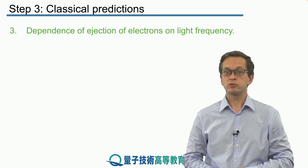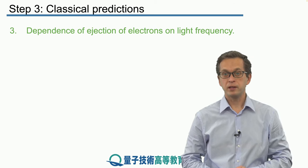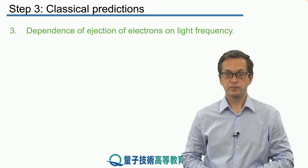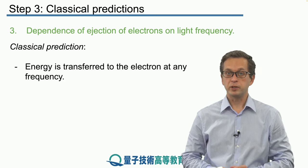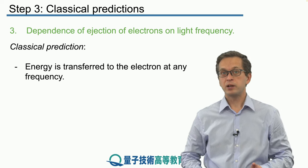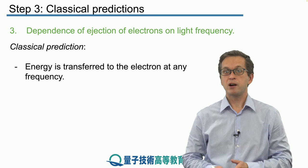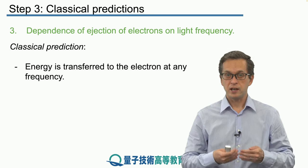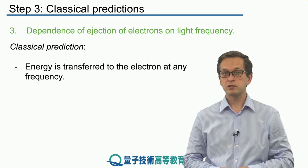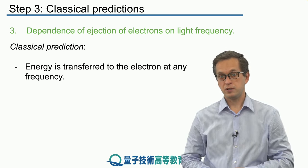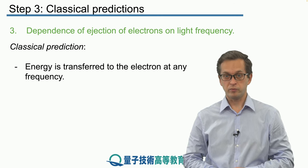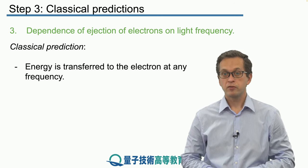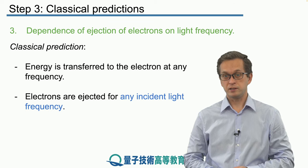Let's move to our third observation: the dependence of ejection of electrons on light frequency. Classically, we expect that any electromagnetic wave, regardless of its frequency, carries energy. If it carries energy and this energy is transferred into the electrons, the electrons should be ejected from the metal. So we should observe photoelectrons for any frequency of the incident light.